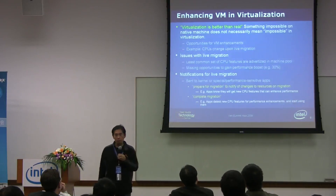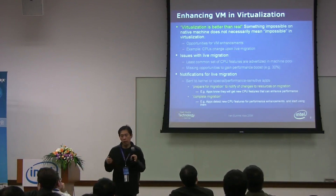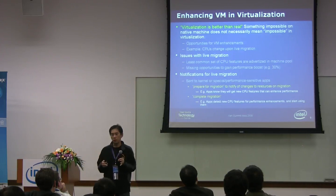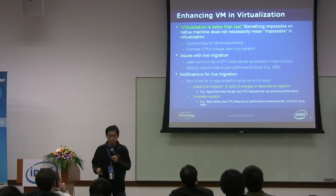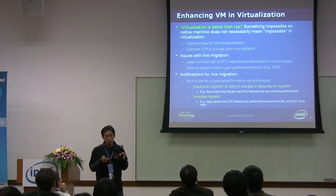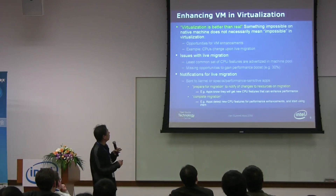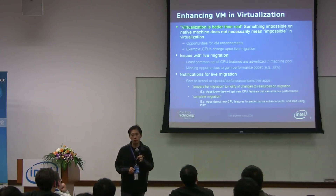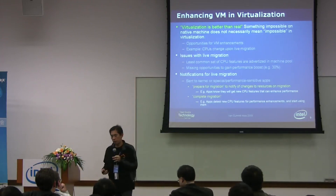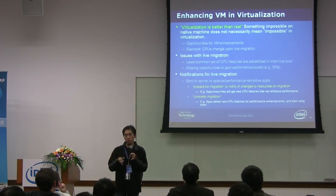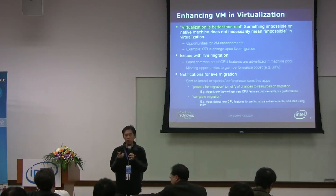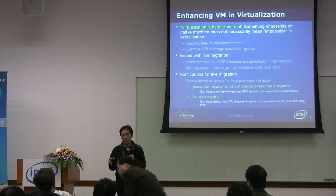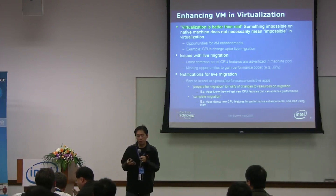With hybrid, we really have the ability to extend existing HBM. And in virtualization — even on native — something impossible in native doesn't really mean impossible in virtualization. One example is live migration: live migration means to the OS basically that the CPU changes at runtime, which doesn't happen on a native system. That's the meaning of live migration.